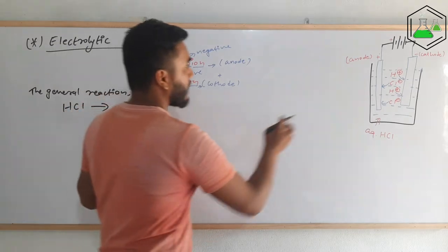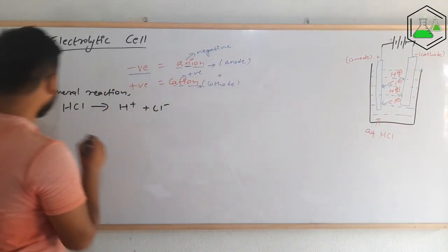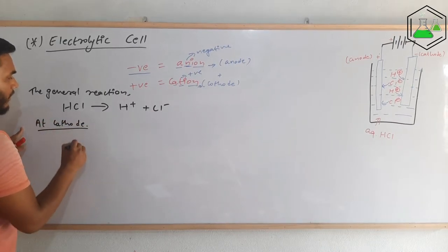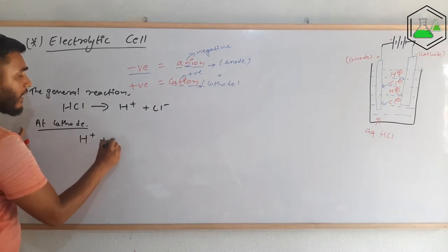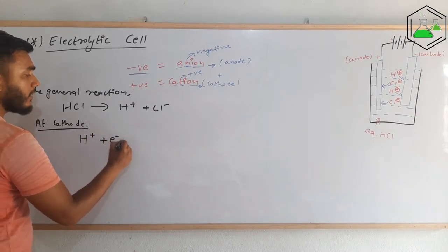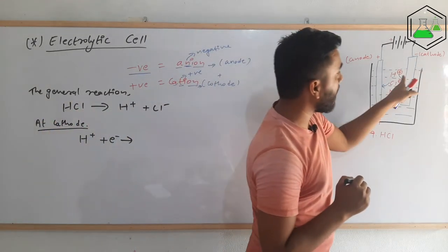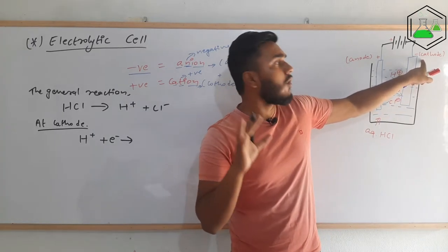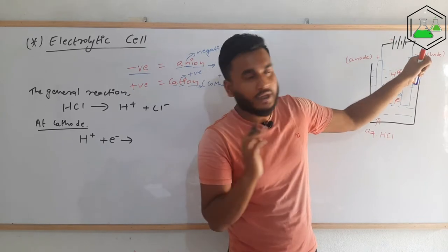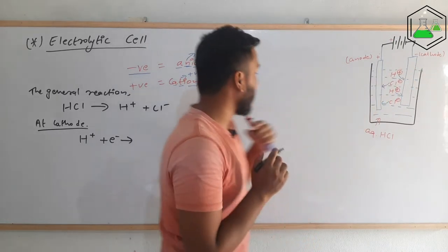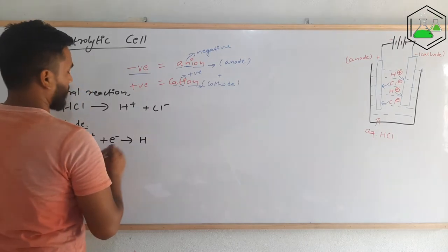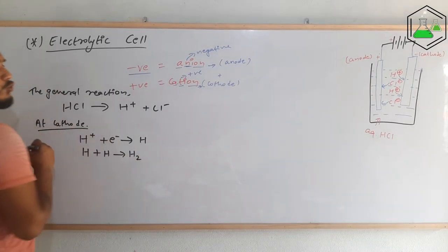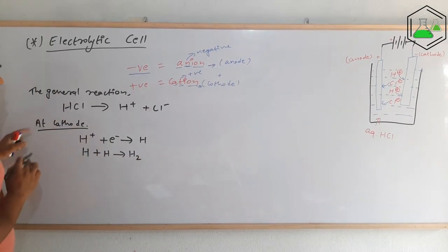Since H+ moves towards the cathode, a reaction happens at the cathode: H+ gains an electron from the cathode. The cathode is negatively charged, so it has electrons available. H+ gains one electron and converts into H, and that H reacts with another H to give H2. This is the reaction that happens at the cathode.